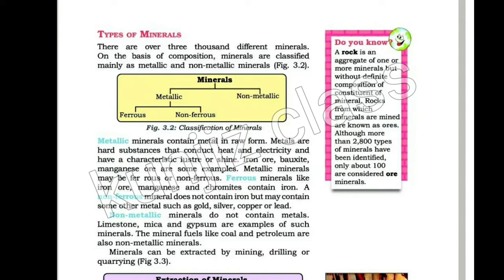Metallic minerals contain metal in raw form. Metals are hard substances that conduct heat and electricity and have a characteristic luster or shine. Iron, bauxite, and manganese are some examples of metallic minerals.